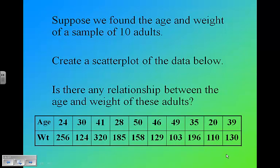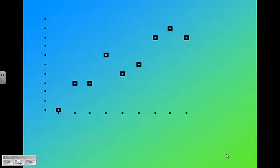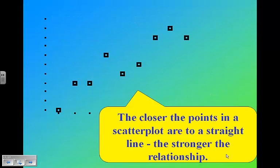I think we can agree that age probably explains weight. The older you get, the more sedentary you get, the less muscle mass you have, so your weight starts getting bigger. We're going to put the age on the x-axis and the weight on the y-axis. You can see here's the first one. The closer the points in the scatter plot are to a straight line, the stronger the relationship. This makes a very nice straight line.